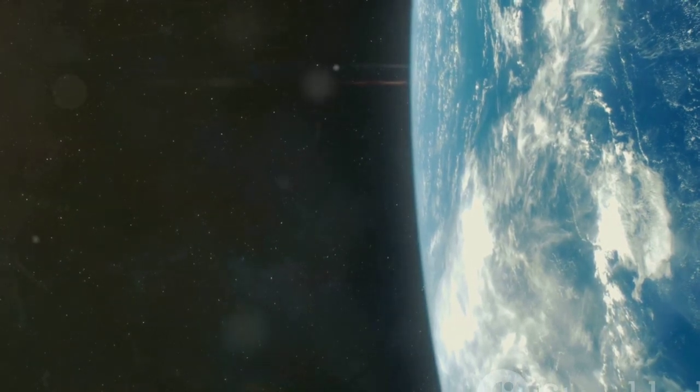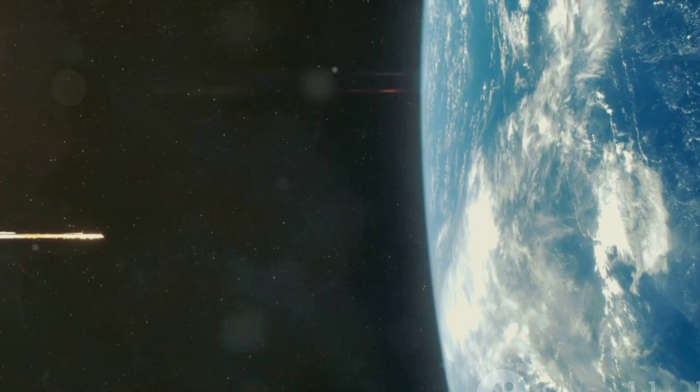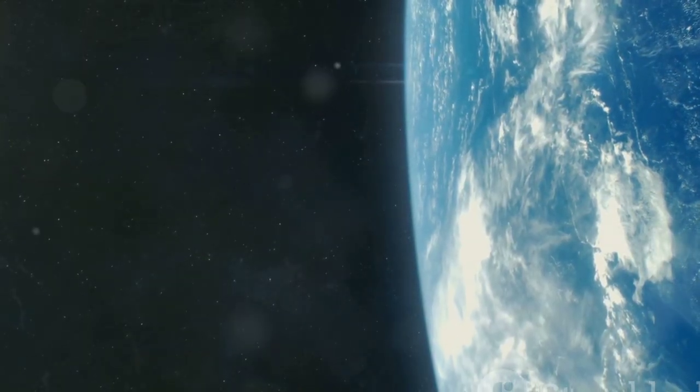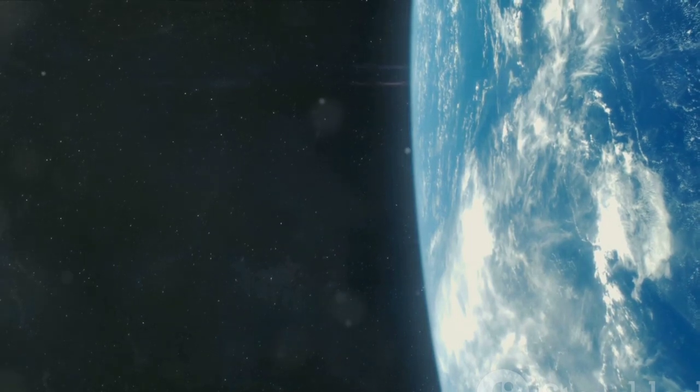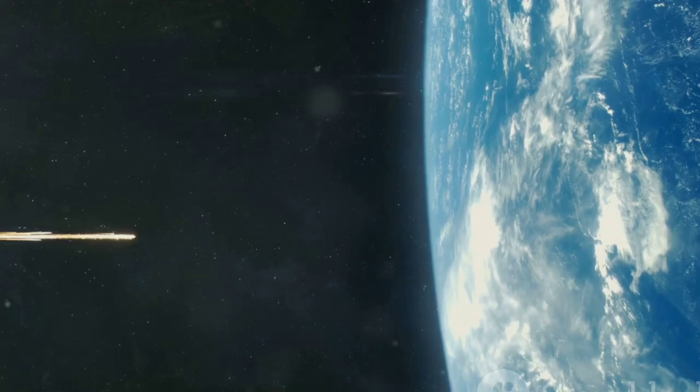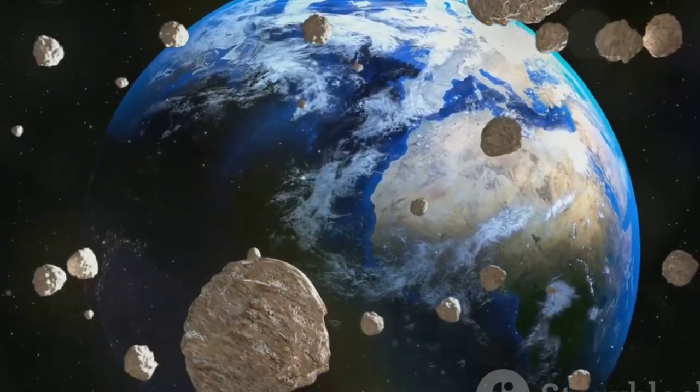But wait, there's more. The aftermath of an asteroid collision can even affect the orbit of a planet. Yes, you heard it right. If the asteroid is large enough and if it hits with enough force, it can knock a planet off its regular orbit. This could mean a change in the planet's day-night cycle, its seasons, and potentially its ability to support life. The universe is a vast and dynamic place where every action has a reaction.